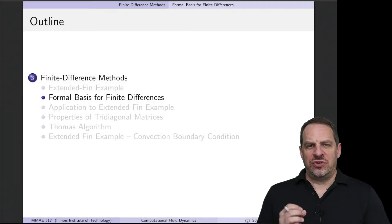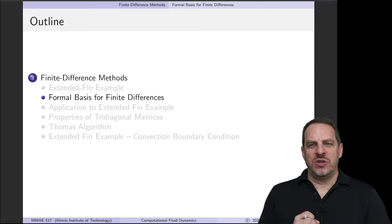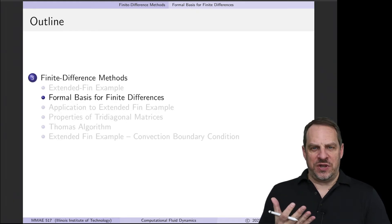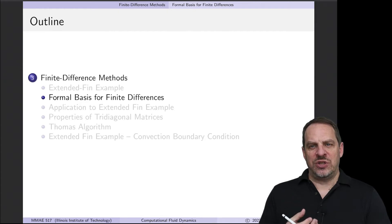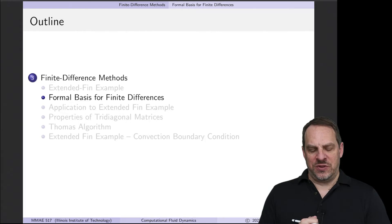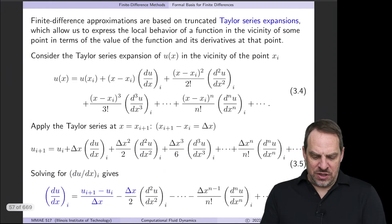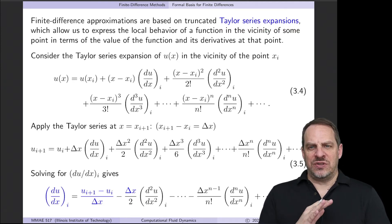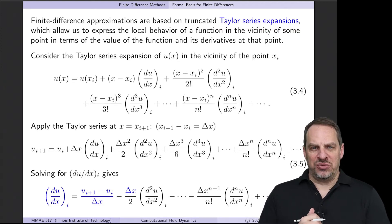In the previous video, we considered the extended fin examples — a specific physical problem — in order to introduce the first two steps of the numerical solution procedure and to see where we need finite difference methods. We got a second order ordinary differential equation that we need to solve. In this video, we're going to look at the formal basis for finite difference methods. These are based on Taylor series expansions, and I'll show you how that's utilized to get the approximations we intuitively obtained in the previous video.